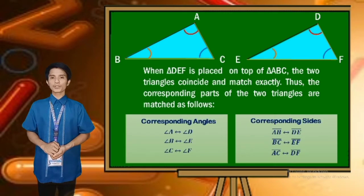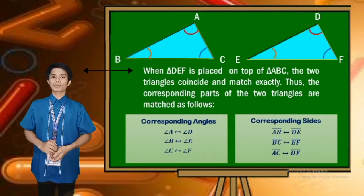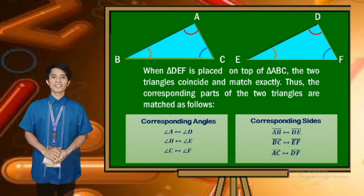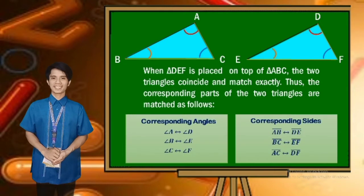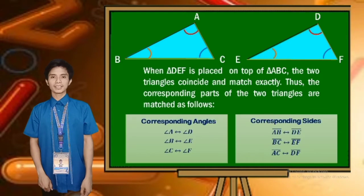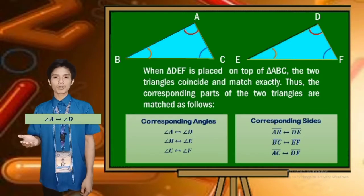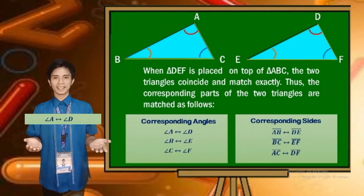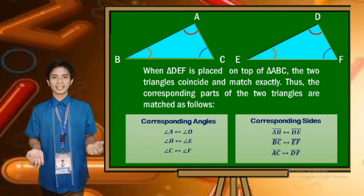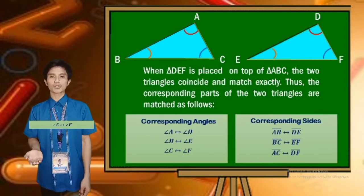We are going to use this symbol to denote correspondence. Here are the list of corresponding angles and sides. The corresponding angles are: Angle A corresponds to angle D, Angle B corresponds to angle E, and angle C corresponds to angle F.